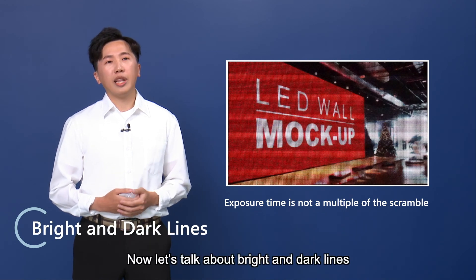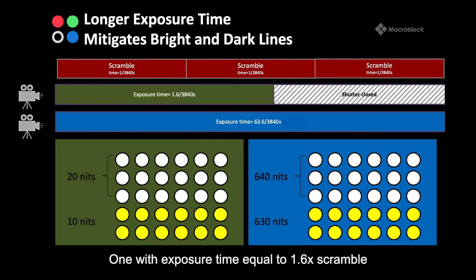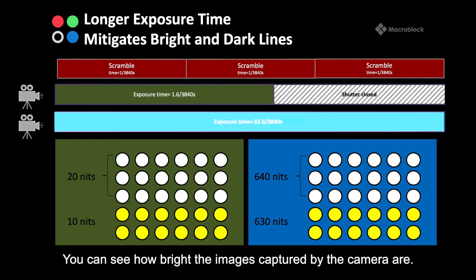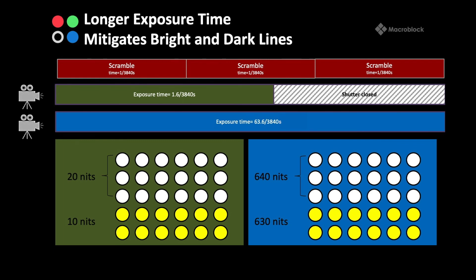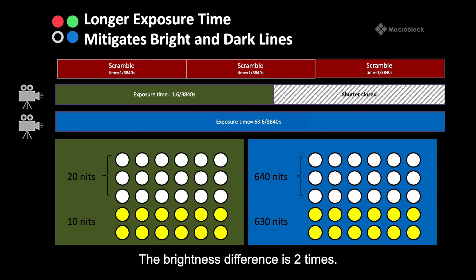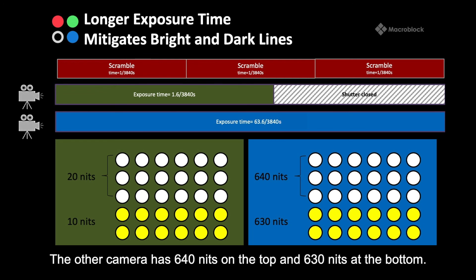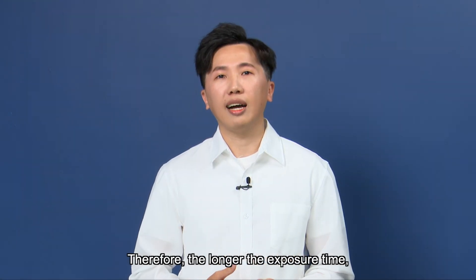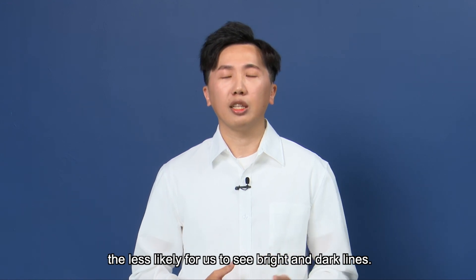Now let's talk about bright and dark lines. Assume two cameras: one with exposure time equal to 1.6× the scramble and the other at 63.6× the scramble. The 1.6× camera captures 20 nits on top and 10 nits at the bottom — a brightness difference of 2×. The other camera shows 640 nits on top and 630 nits at the bottom, a difference of only 1/64th. Therefore, the longer the exposure time, the less likely you are to see bright and dark lines.